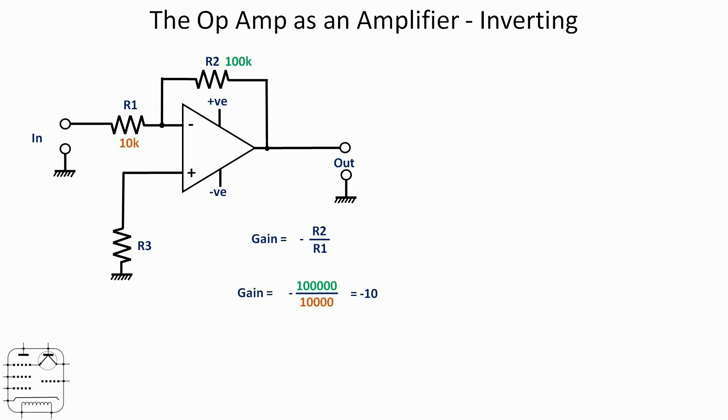Now R3 also has an equation to calculate it, which is shown there: R1 times R2 over R1 plus R2. So if we do that maths, it gives us an answer of 9090 ohms. Don't have one of those resistors, not surprisingly. The nearest I've got is an 8k2.